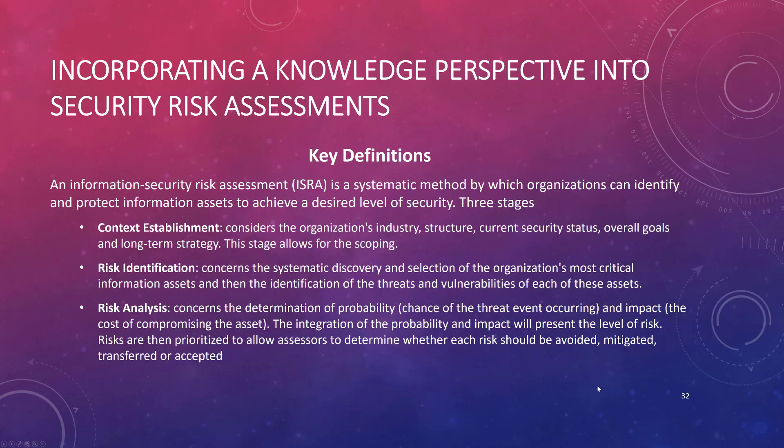A couple of definitions to cover over the next couple of slides. If you're doing an information security risk assessment, there are three phases, as the author of the paper suggests. The first is the establishment of context — what's the scope and environment that we're operating in? The second is the identification of risk in the organization, which means identifying all the threats, vulnerabilities, and assets. Then there is risk analysis based on that risk identification, determining what you're going to do.